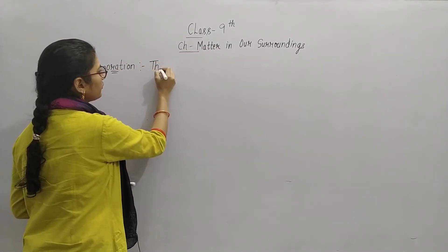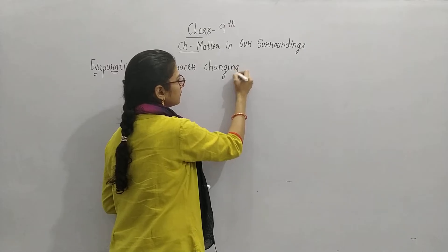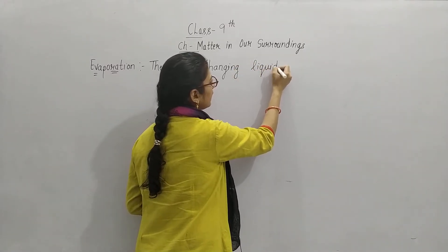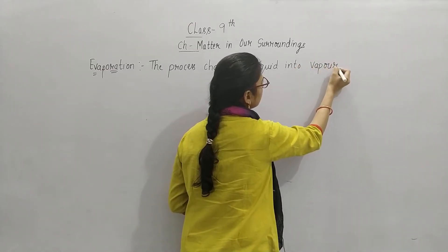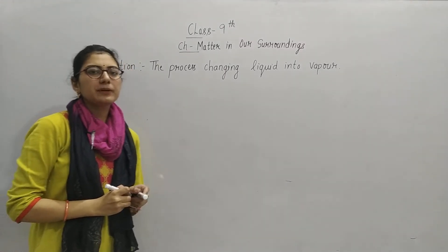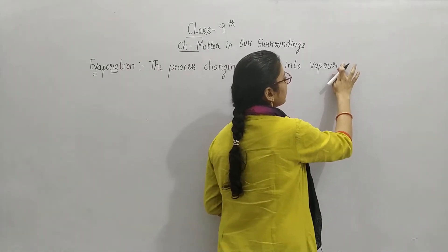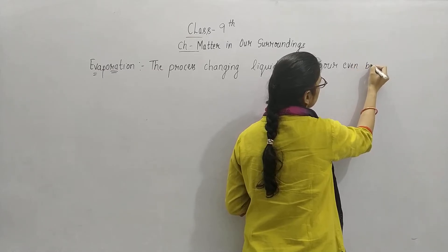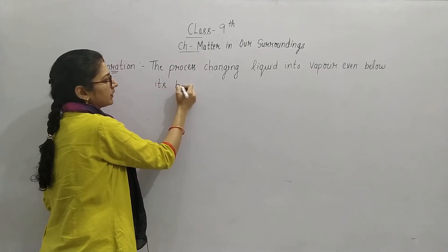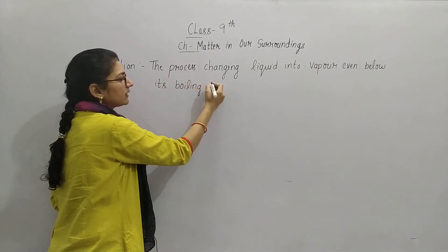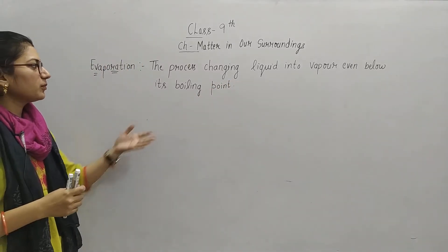The process of changing liquid into vapor. वो process जिसमें liquid आपका vapors में change होता है, उस process को हम evaporation बोलते हैं. और यह even below its boiling point हो सकता है. Boiling point क्या होता है? जिस point पे वो boil करना start करे — the temperature at which a substance starts to boil, उस temperature को बोलते हैं हम boiling point.